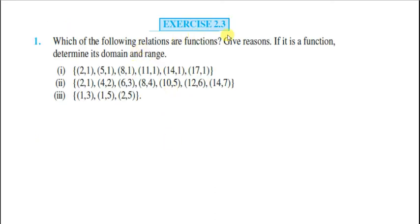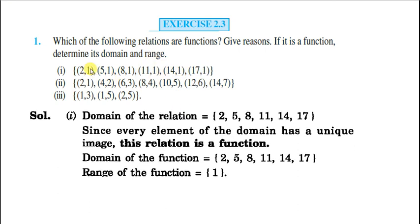Next is, which of the following relations are functions, give reasons, and determine its domain and range. Function hai ya nahi, isko check karne ke liye hum kya karte hain. Dekhte hain ki koi bhi do ordered pairs should not have the same first element. Toh is case mein, kisi bhi do ordered pairs mein first element same nahi hai, so it is a function. And the domain will be the set of all first elements, that is 2, 5, 8, 11, 14 and 17. And the range is the second element and second element is 1 in each case, so the range is 1.